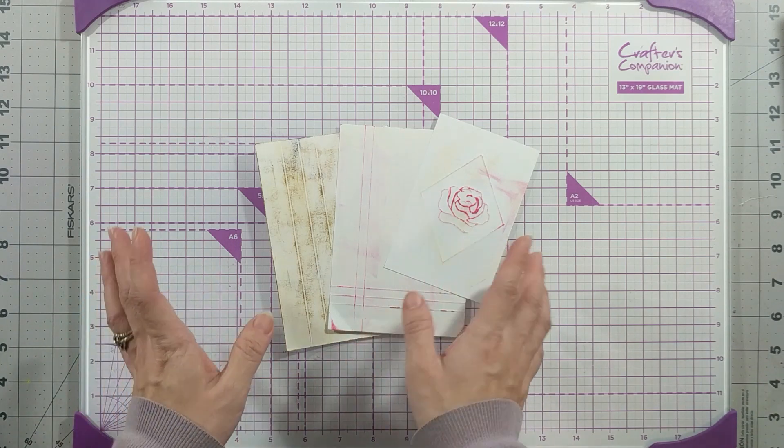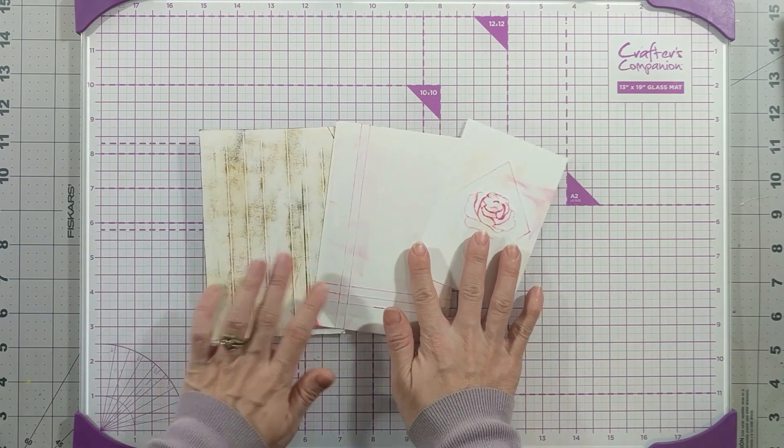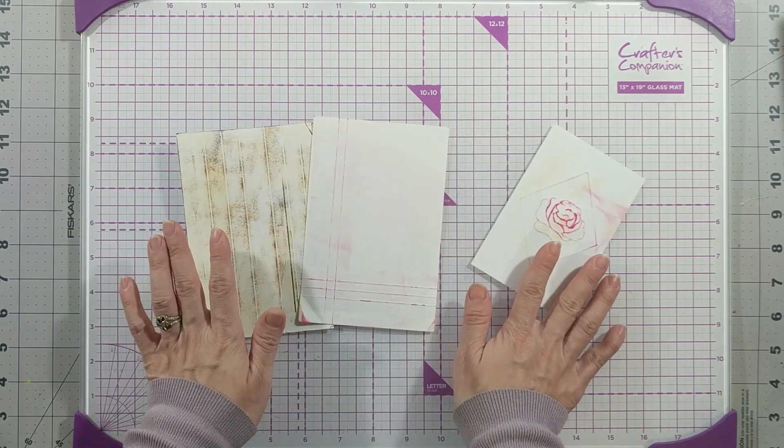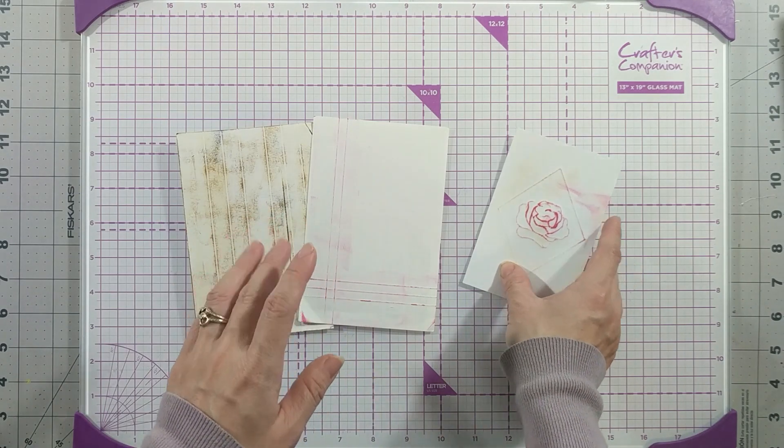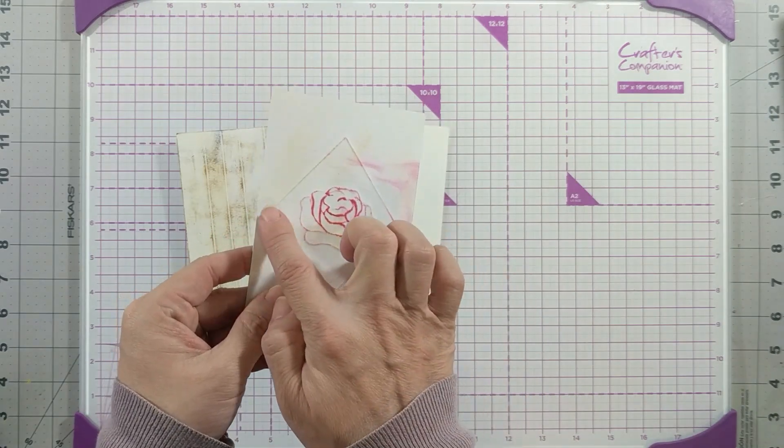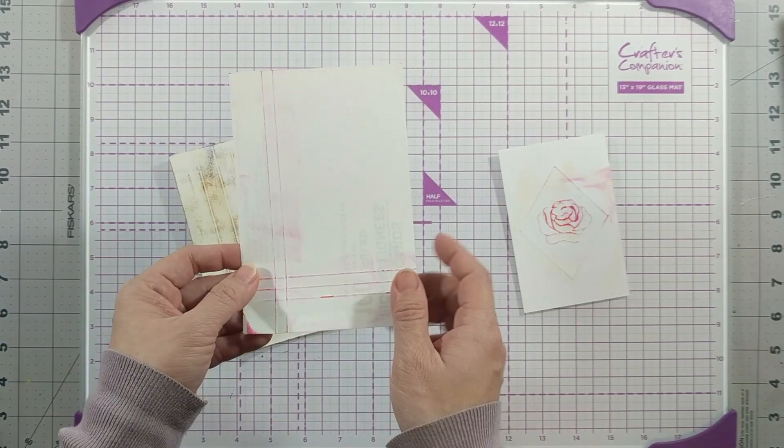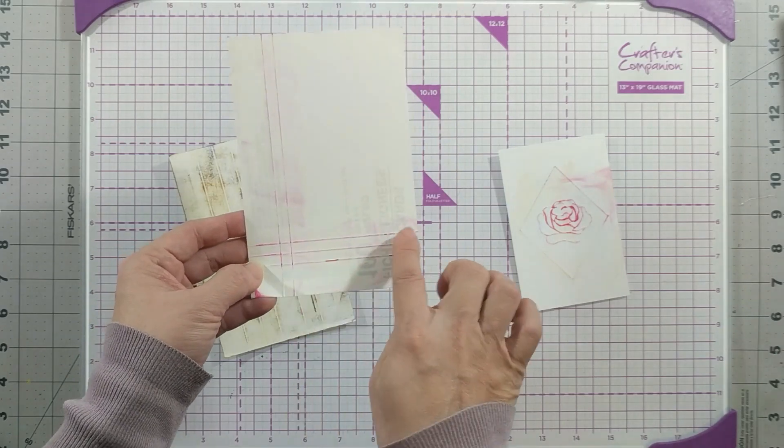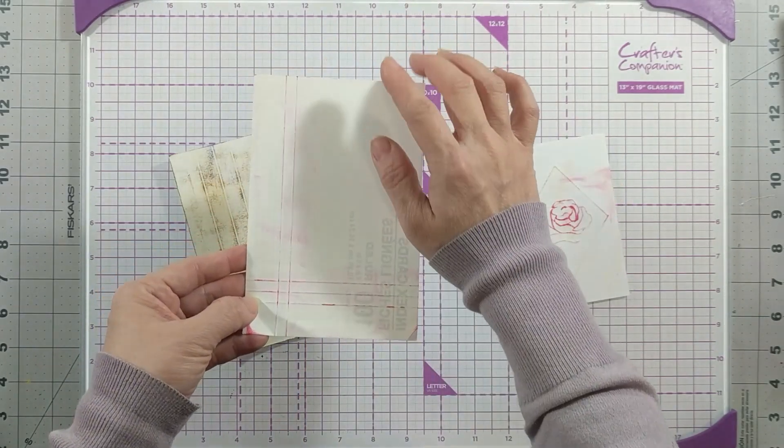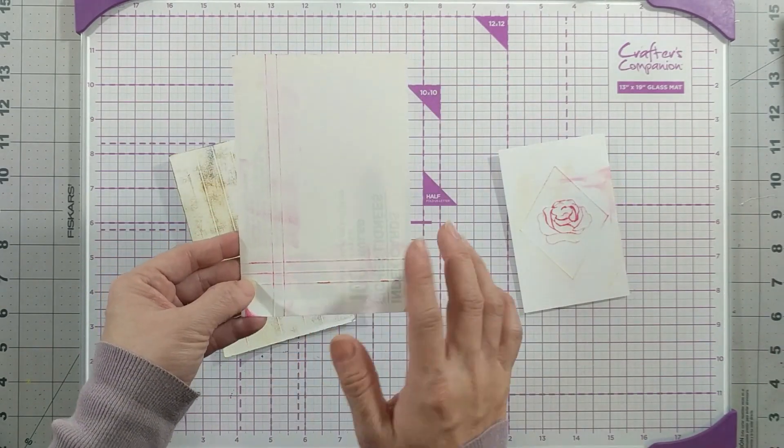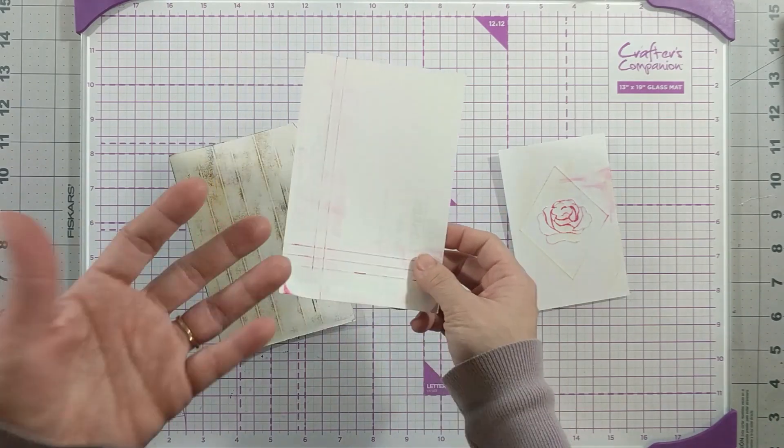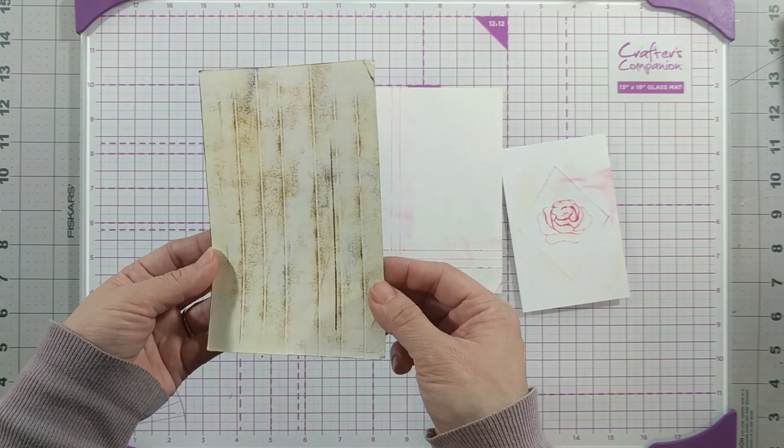These are the cards that I made earlier not using an embossing folder. So this is one design, just diamond with a flower inside. And this is the simplest one, just lines, and I dragged my ink pad across it just to color it.